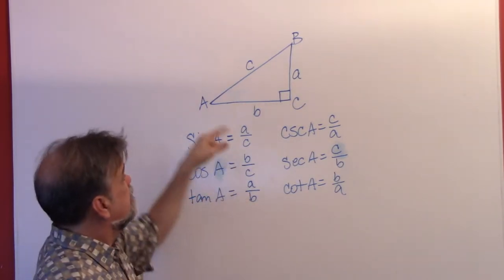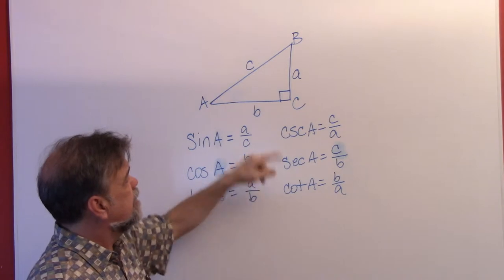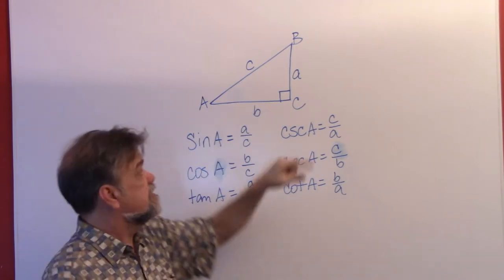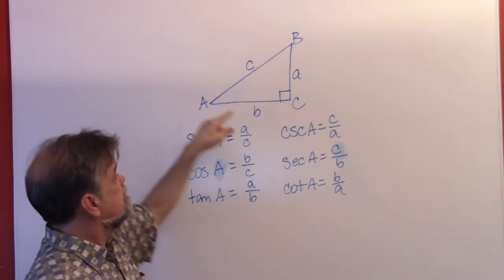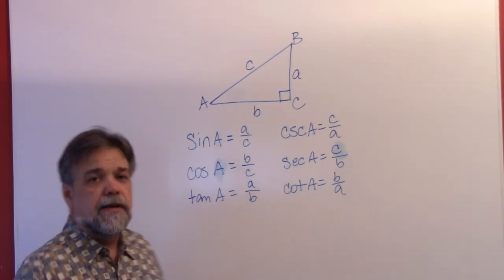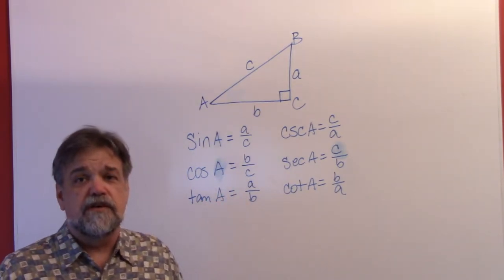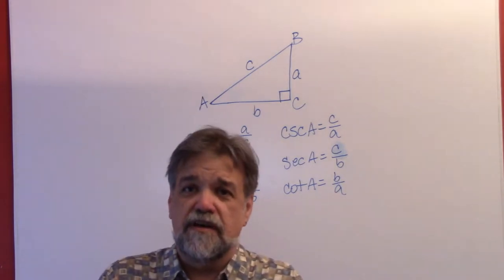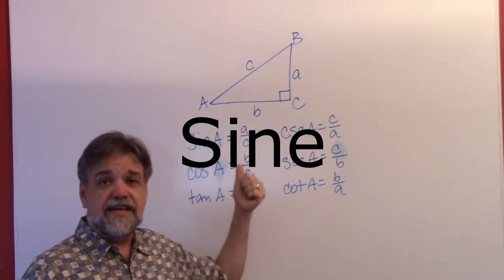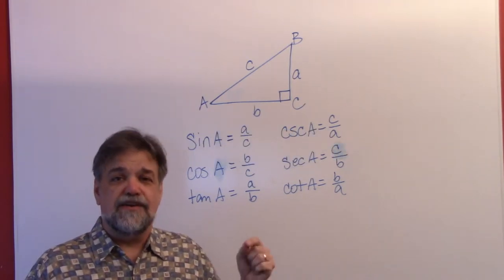So let's just jump right into it. Here's a triangle — triangle ABC. Each corner is denoted by a capital letter, each side by a lowercase letter. We have angle A here. By the way, angle C is our right angle — this is a right triangle. Now, I have written here the sine of A — and let me stop right now. These are abbreviations. Please don't ever say 'the sin' or 'the cos' or 'the tan.' These are abbreviations. The actual words are sine, cosine, tangent, cosecant, secant, and cotangent.